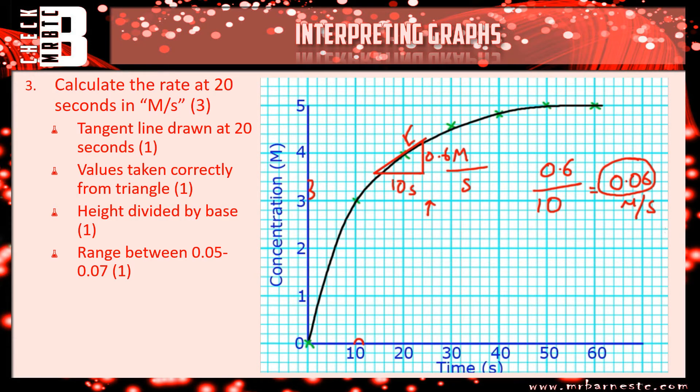Don't worry about the units for this one, but I would get into a habit of putting them in there. But, because it gave you it in the question, you usually don't get marks for it. The examiner in this would have accepted anywhere between 0.07 and 0.05 to allow for error in your readings.